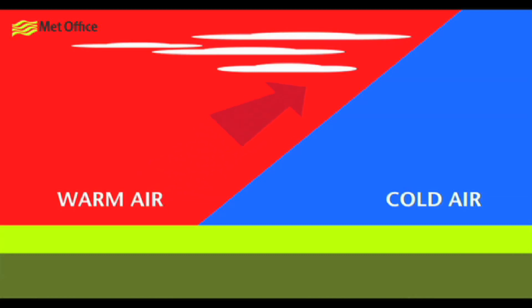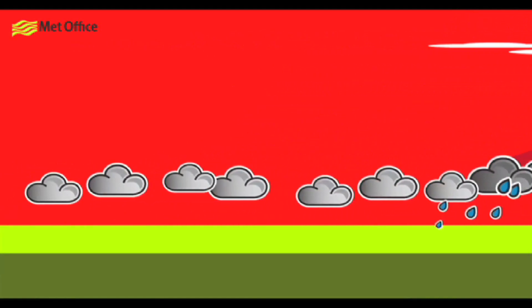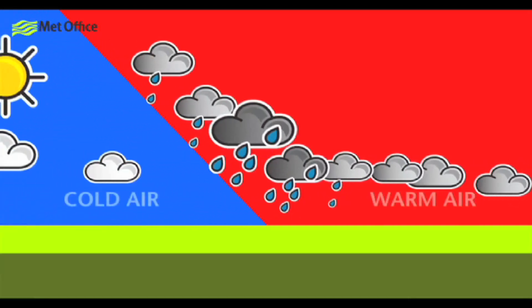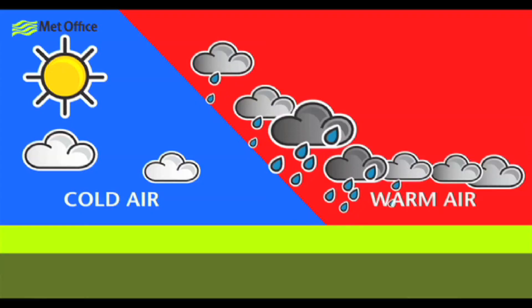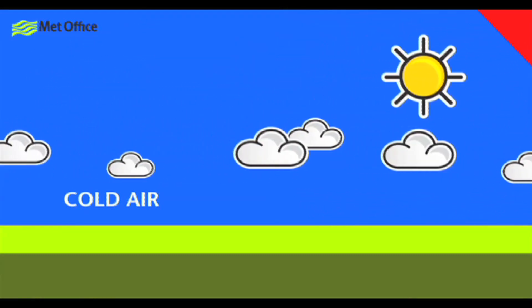Warm fronts are easy to spot because you see the leading edge of high cloud approaching on the horizon across clear skies. However, warm fronts leave clouds behind, and the following cold front sneaks in under the cover of the clouds. This makes them hard to spot just using your eyes, as it's difficult to see any changes that might be on the way. But remember that the pressure falls with a warm front because the air is less dense. Well, the opposite is true with a cold front. A cold front is a bit like a wedge. The air is colder and more dense than the warm air, and it scoops it up, causing the pressure to rise. And we can spot that using a barometer.